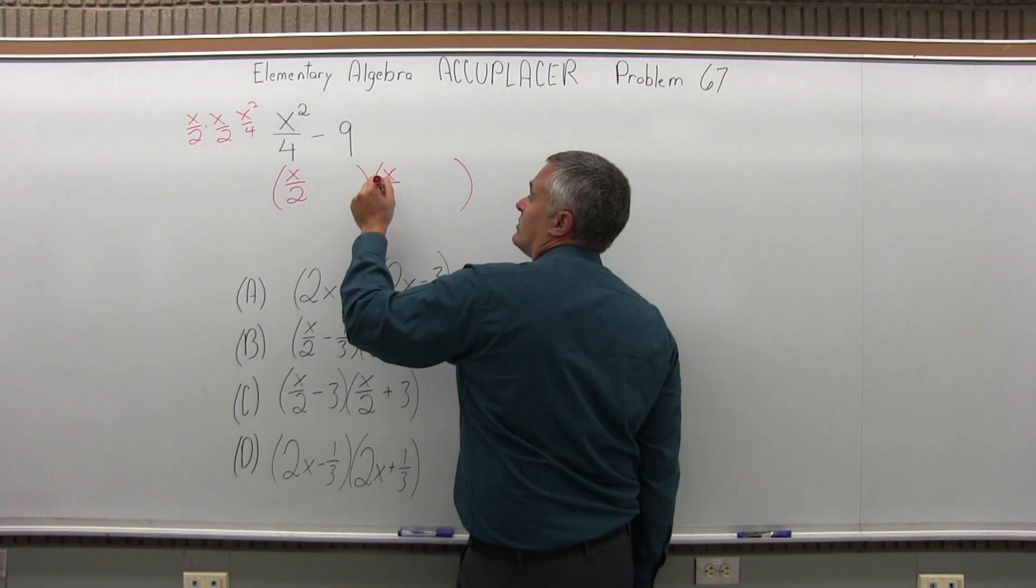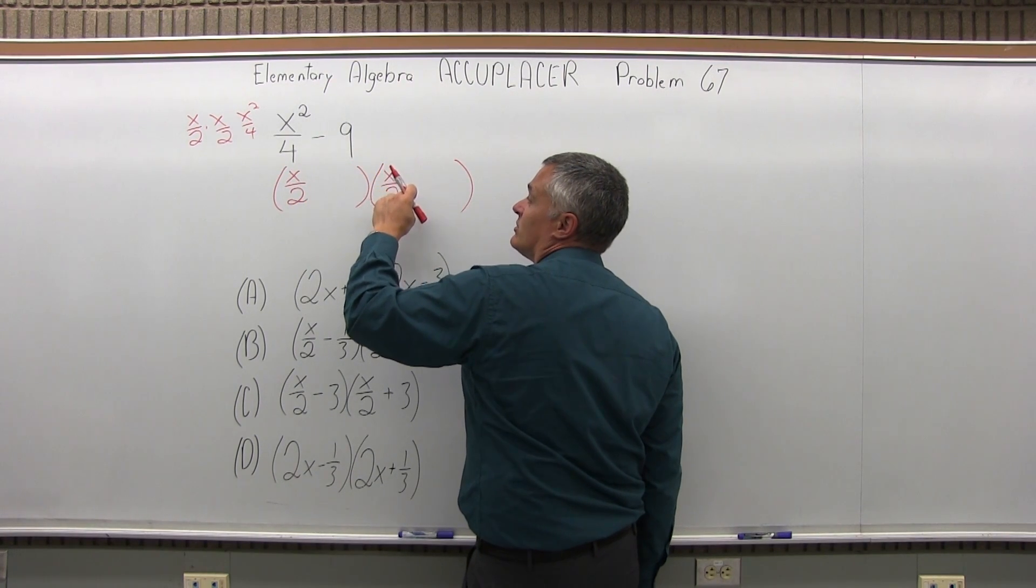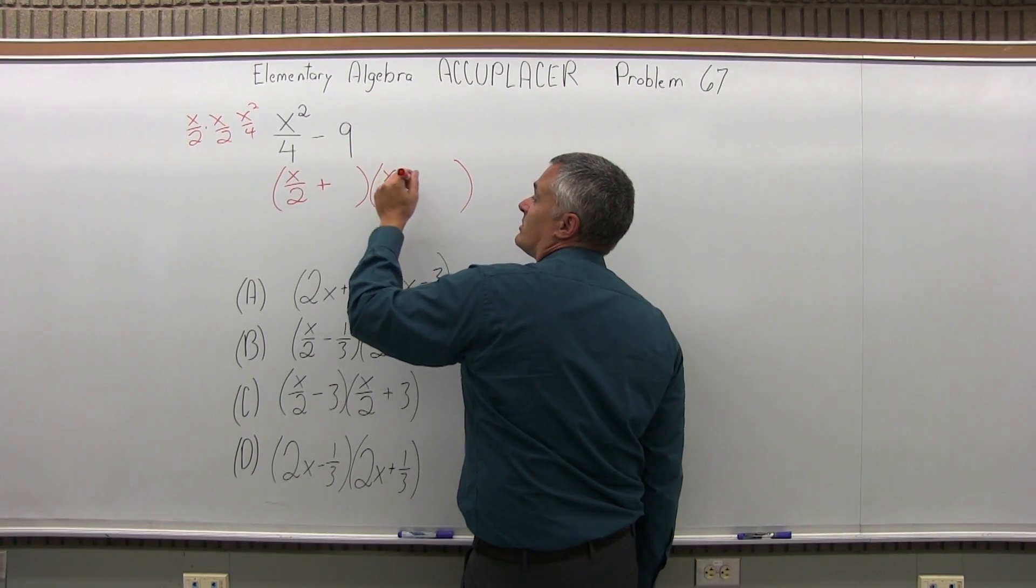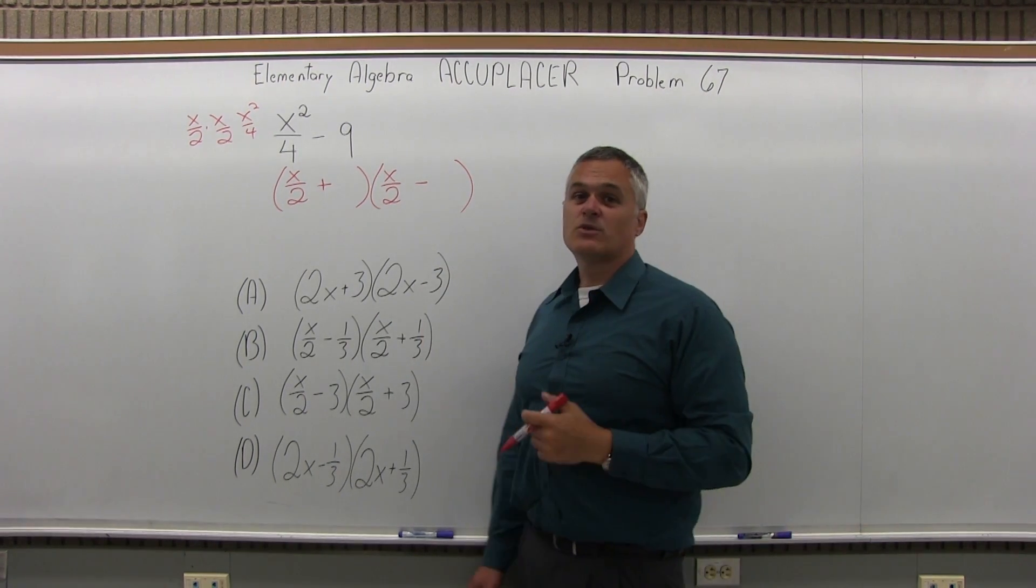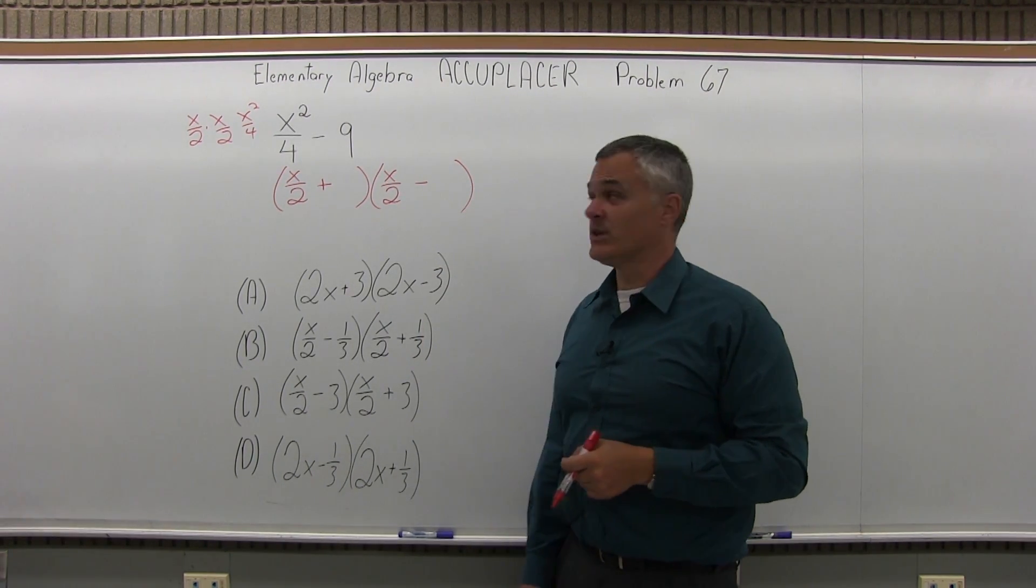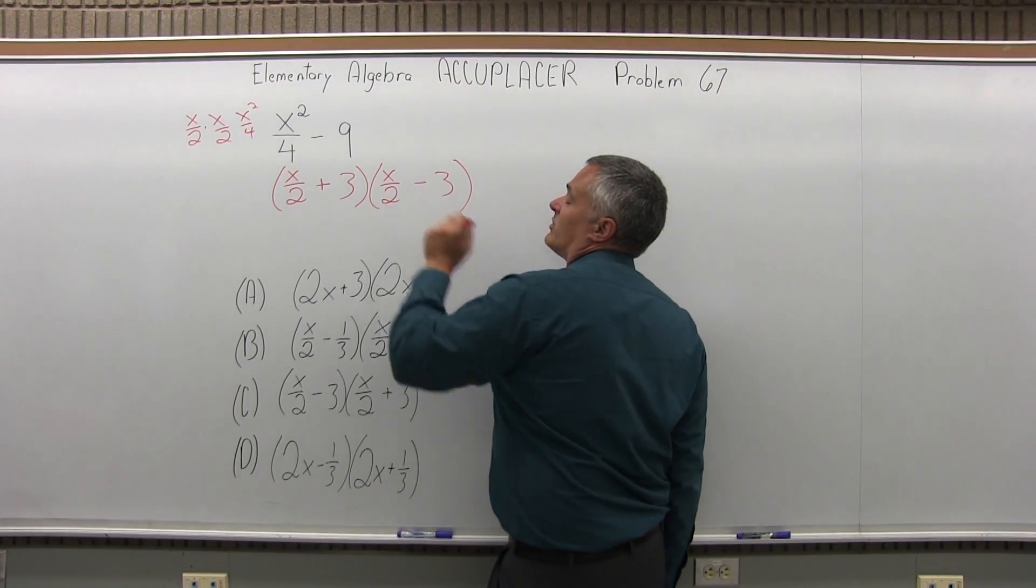And so I'm going to have x over 2, x over 2. Then one parenthesis gets a plus, one gets a minus. And then the second piece, that square root is easier to recognize. The square root of 9 is just simply 3. So I'm going to have a plus 3 and a minus 3 in the parentheses.